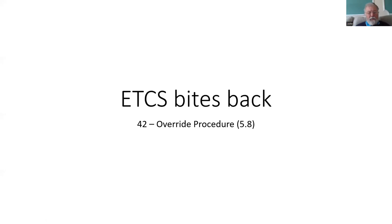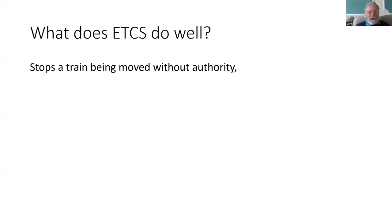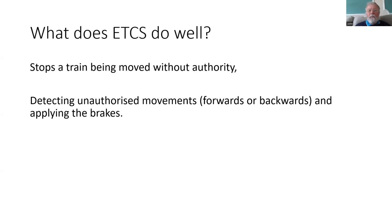Welcome back to another ETCS video. Today we're going to have a look at the override procedure. So why do we have an override procedure? Well, ETCS is a very effective system. It stops a train being moved without authority, and it detects unauthorised movements either forwards or backwards, and it will apply the brakes.